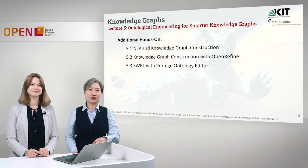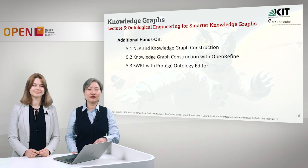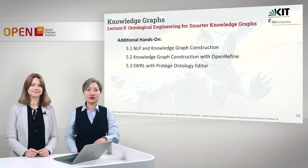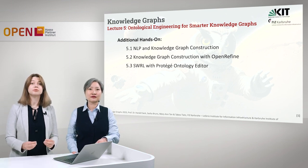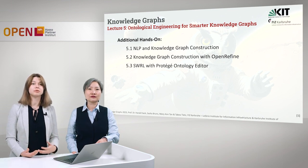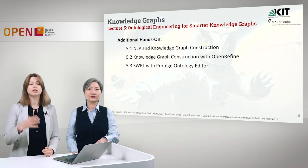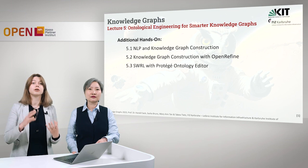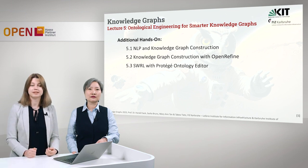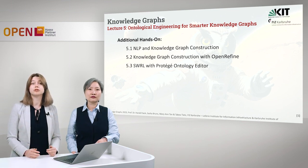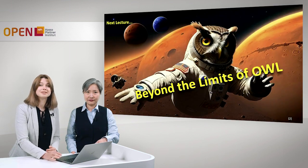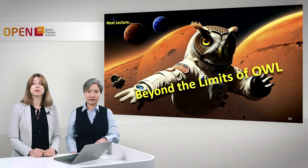As always, at the end of each lecture we have prepared additional hands-on for you. We start out with knowledge graph construction from unstructured text using natural language processing techniques such as named entity recognition and relation extraction. Then we will show you a new tool called OpenRefine, which is really helpful when you have to transform structured data like CSV files into RDF, and also how to connect your entities with entities from Wikidata. An additional hands-on covers SWRL, the Semantic Web Rule Language, with Protégé ontology editor, where we will look at how rules can be helpful for deducing new knowledge. And so, let's start. The first lecture is: Beyond the Limits of OWL.